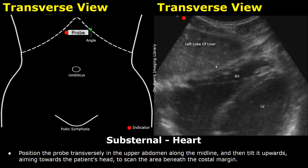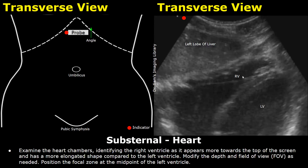The left lobe of the liver is seen as the foremost structure. The right ventricle is seen first and will appear more towards the top of the screen. It has a more elongated shape compared to the left ventricle, which will be seen below. The indicator or orientation marker is towards the patient's right side.